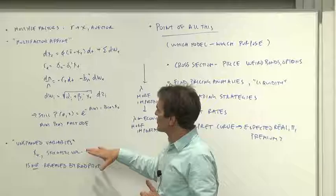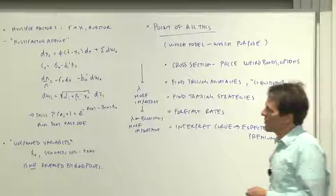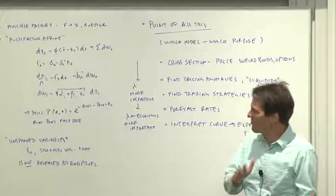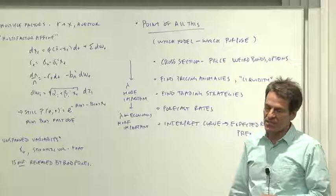And it turns out that you can't always figure out the state variables from the bond prices. So we now have term structure models where there's extra state variables wandering around that are not related to the term structure factors but describe volatility. They're important for pricing options and for forecasting things.